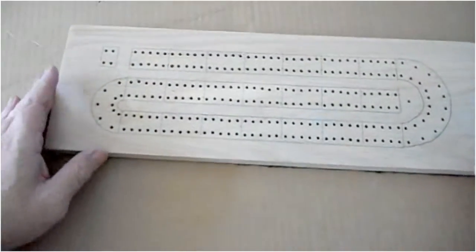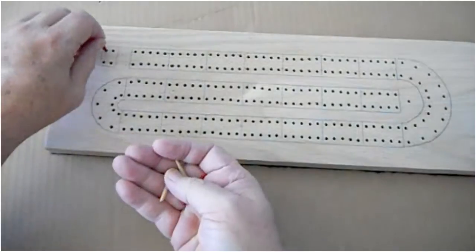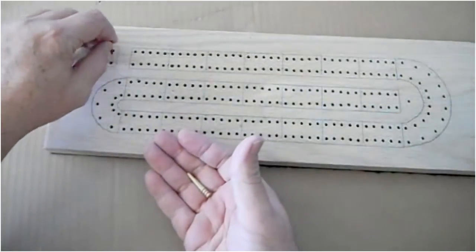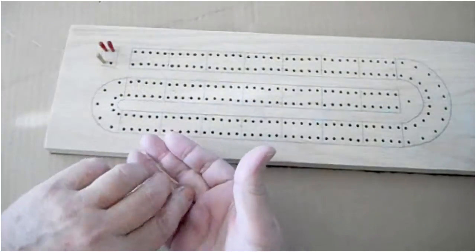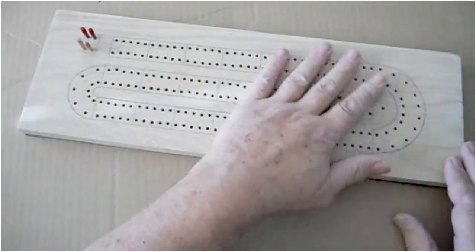This is the finished cribbage board. Some of the holes are out of alignment, some of the lines are a bit off, but this is my first wood project since high school, and I think it's a pretty darn good cribbage board. My wife and I are going to have years of fun playing on a cribbage board I made. Thank you.